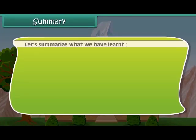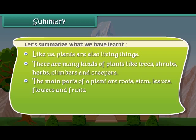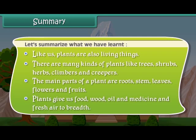Now friends, let us summarize what we have learned so far. Like us, plants are also living things. There are many kinds of plants like trees, shrubs, herbs, climbers and creepers. The main parts of a plant are roots, stem, leaves, flowers and fruits. Plants give us food, wood, oil, medicine and fresh air to breathe. We'll see you next time.